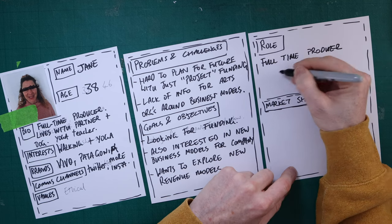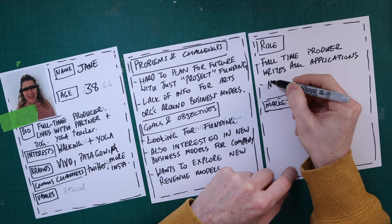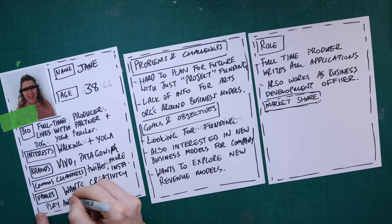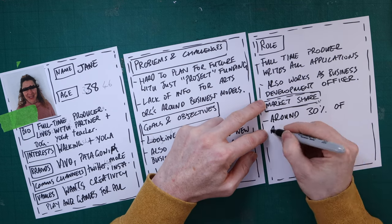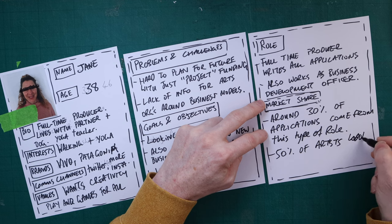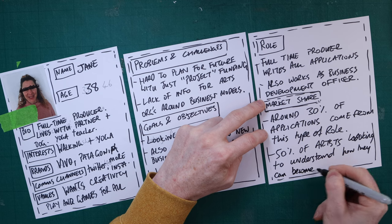From here, we built on the persona further, this time by adding more context to the user for the organization. The role section gives us an opportunity to understand how important this user is to the organization, normally done through additional research. In this case, we found that around 30% of the artists wrote their own applications and were also responsible for their organization's business development, and around 50% of the artists in this role were looking to gain an understanding as to how they might become more financially sustainable as an organization. So as you can see, we've built from an initial fictional persona, carried out design research to explore the individual, which has made them real and engaging, and we've built this out further to cover their objectives and goals. Finally, we looked at the data to understand how important this type of person is to the organization. Hopefully we have managed to explain how you can create engaging user personas for your projects through research.